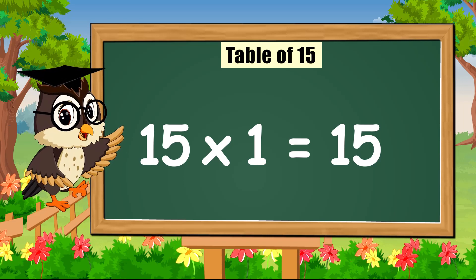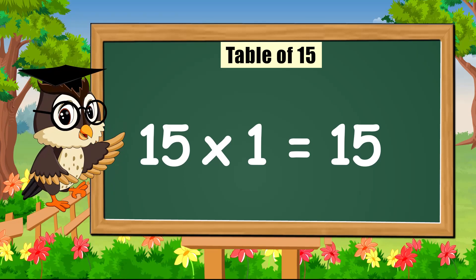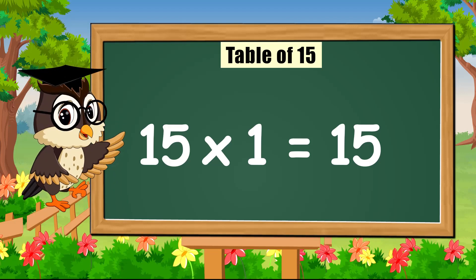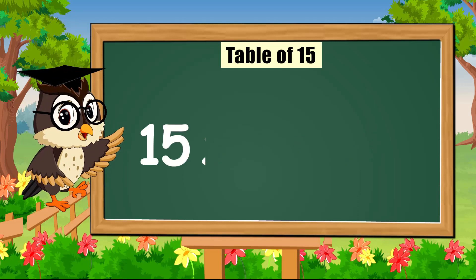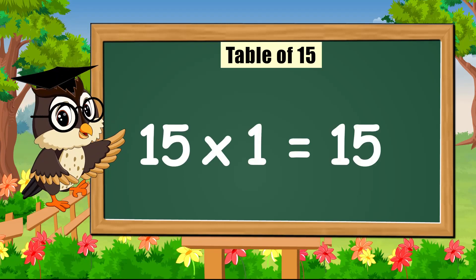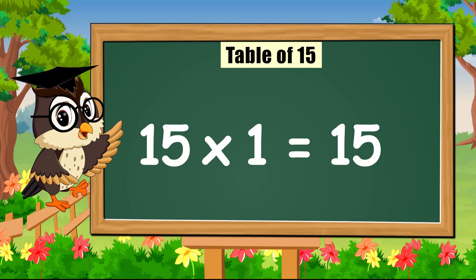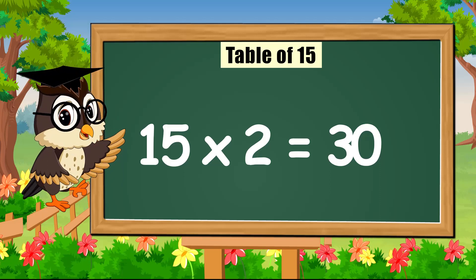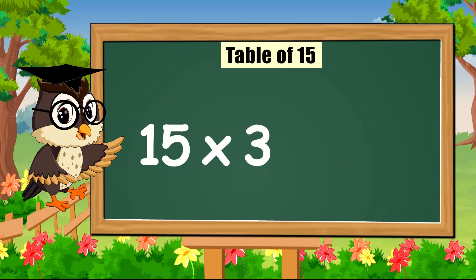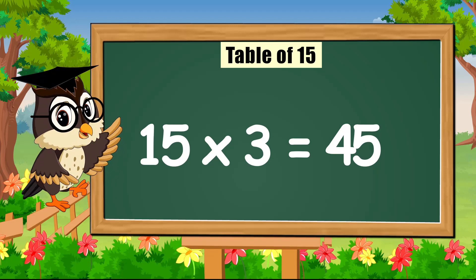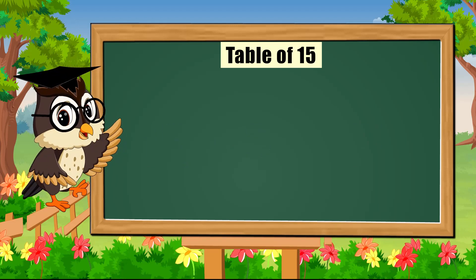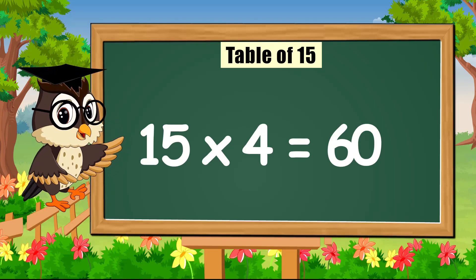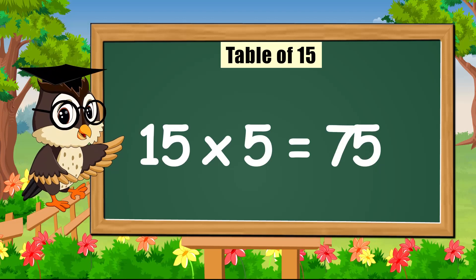Hello everyone, we are gonna learn today. So sing with me the table of fifteen, come on. Fifteen times one is fifteen. Fifteen times two is thirty. Fifteen times three is forty-five. Fifteen times four is sixty. Fifteen times five is seventy-five.